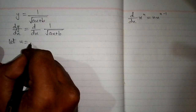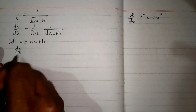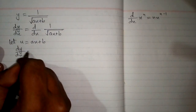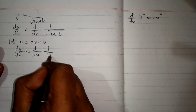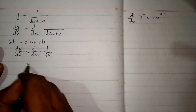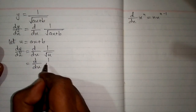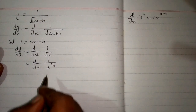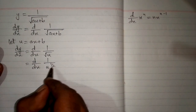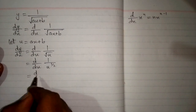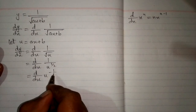First, let u is equal to ax plus b. So, the derivative dy by dx is equal to d by dx of 1 upon square root of u. And this can be written as d by dx of 1 upon u to the power 1 upon 2, because square root of u means u raised to the power 1 upon 2. And then d by dx of u to the power minus 1 upon 2.